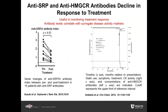In a number of studies, the levels of SRP and HMGCR antibodies have been reported to significantly decline following treatment. Declining antibody levels correlate with surrogate disease activity markers such as serum creatine kinase and may be useful in monitoring treatment response.